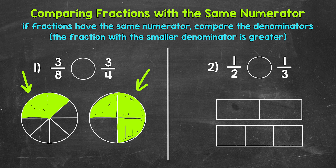The larger a denominator is, the more parts a whole is divided into — therefore, the parts are smaller. The smaller a denominator is, the fewer parts a whole is divided into — therefore, the parts are bigger. So if we have fractions with the same numerator, the fraction with the smaller denominator is greater. Those equal parts of the whole are bigger, so we have more of the whole, a greater portion of the whole, and we can see that with these circles. Even though we have three parts shaded in for both, 3 fourths is greater.